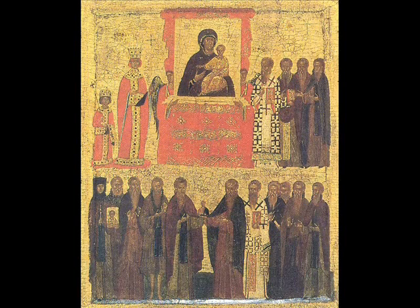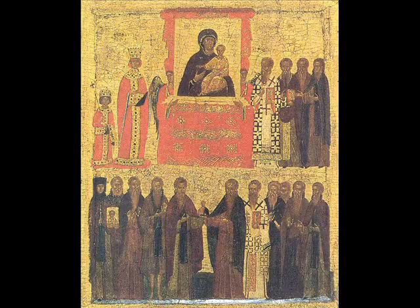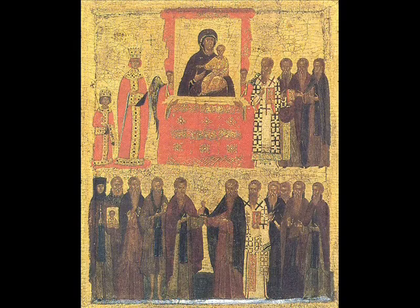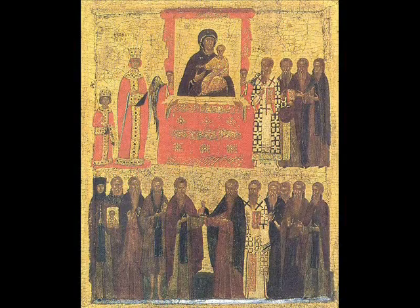The most important figures among the many figures shown in it — there are two layers or two ranges of figures — are the ones in the top: the 9th century Empress Theodora and her son, the Emperor Michael III, shown as a small child next to his mother, and the Patriarch Methodius, who presided over the official ending of iconoclasm, the attack on religious images in the 8th and 9th centuries.